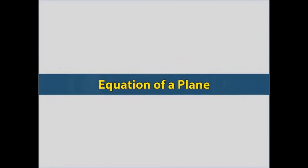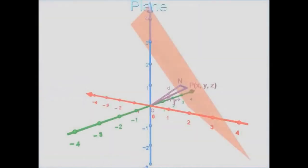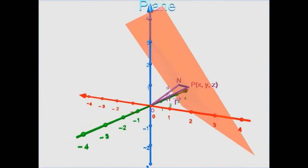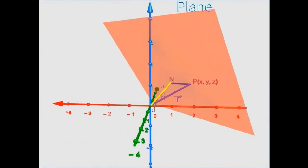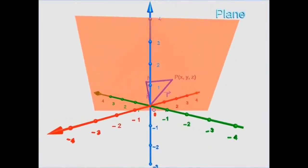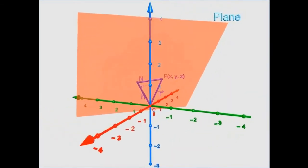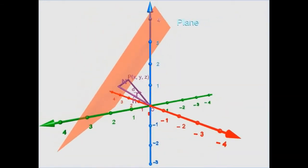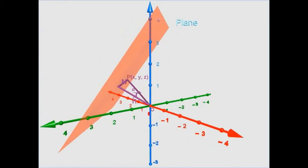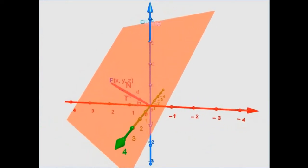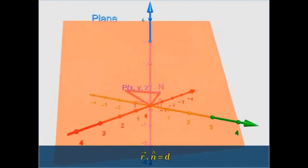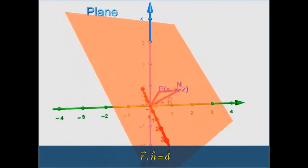Let us recall the equation of a plane in normal form in vector form. Let D be the perpendicular distance from the origin. Let vector ON be the normal from the origin to the plane. Cap n is a unit vector along ON, so vector ON equals D cap n. Let vector R be the position vector of the point P. Then the equation of the plane is given by vector R dot cap n equals D.